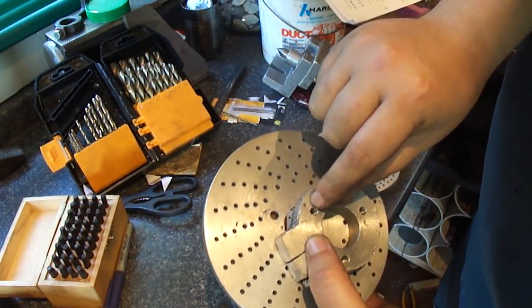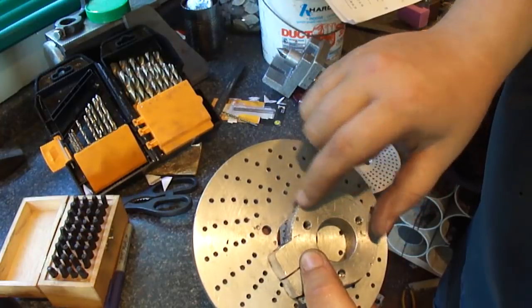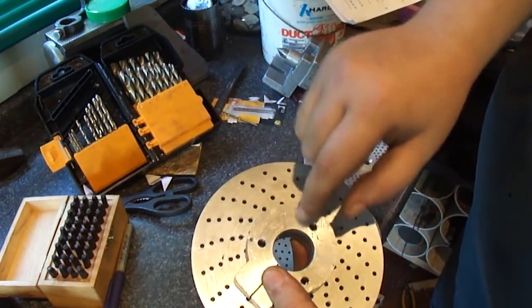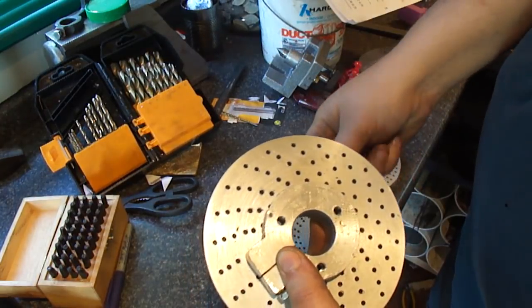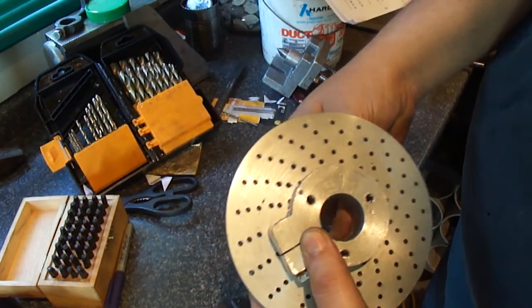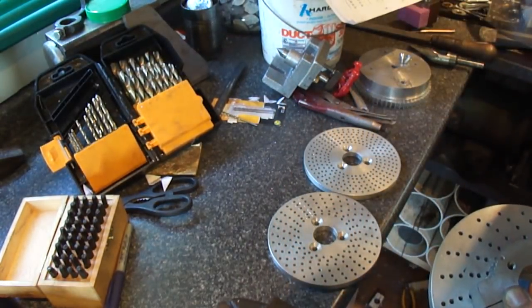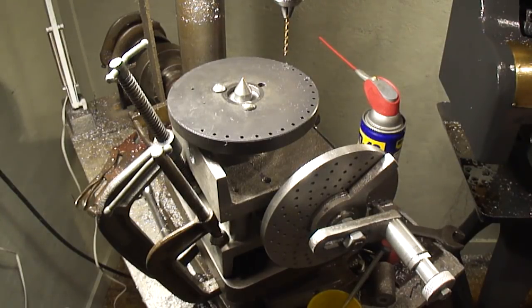So I put a dimple on the back side of this thing where it's not going to be seen. And a dimple here. So I can align the screw holes the same way each time. So it'll always be in alignment to the counter sunk screws.